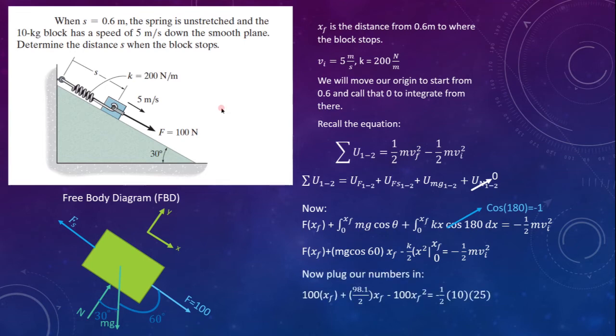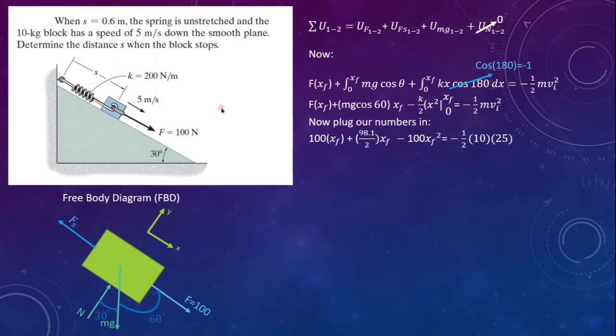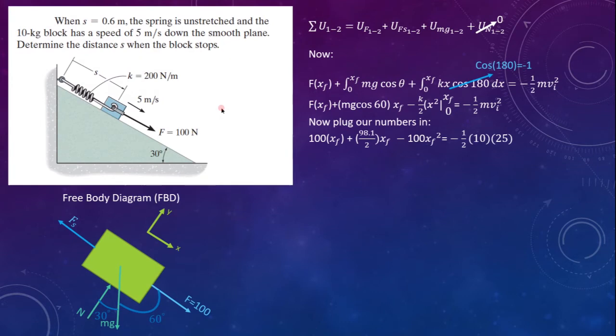Now, we're going to plug numbers in so we can simplify the equation and then solve for x final. So, we move on, get a little space cleared up. We're still having our previous information up here. We will plug our numbers in now and simplify.